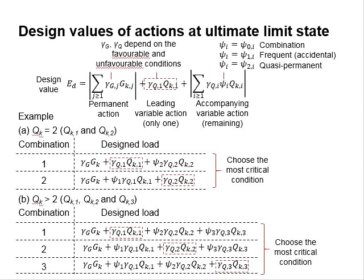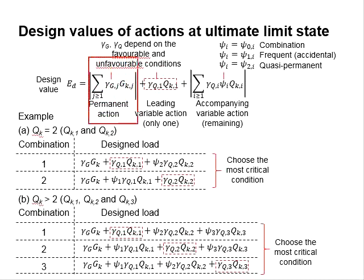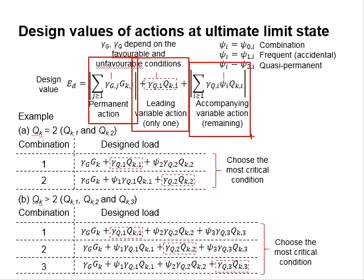The design values of actions at the ultimate limit state is given in this equation. It is basically the summation of the permanent actions, leading variable actions, and the accompanying variable actions.